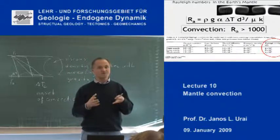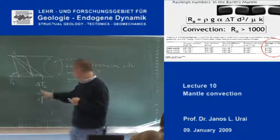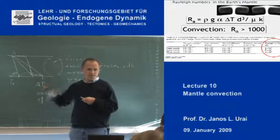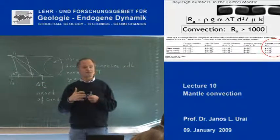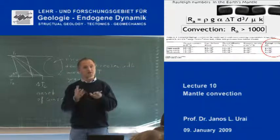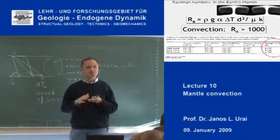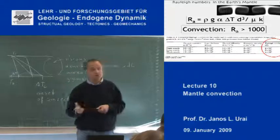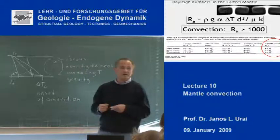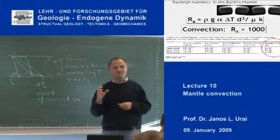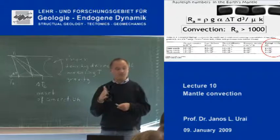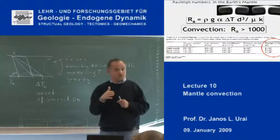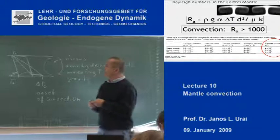Convection is something that spontaneously arises if you reach a critical condition. And that way the heat of the Earth is transported out much more efficiently than it would be possible by conduction only. This is the main message of the first part of my lecture. And the way to quantify or calculate whether a fluid will be convecting or not is by calculating the Rayleigh number.